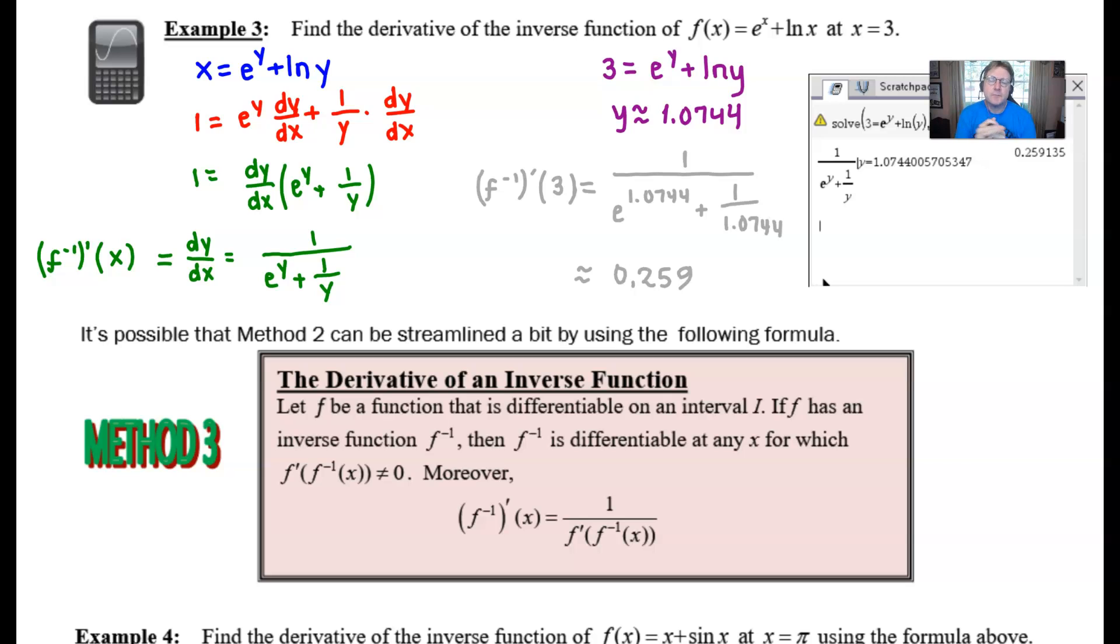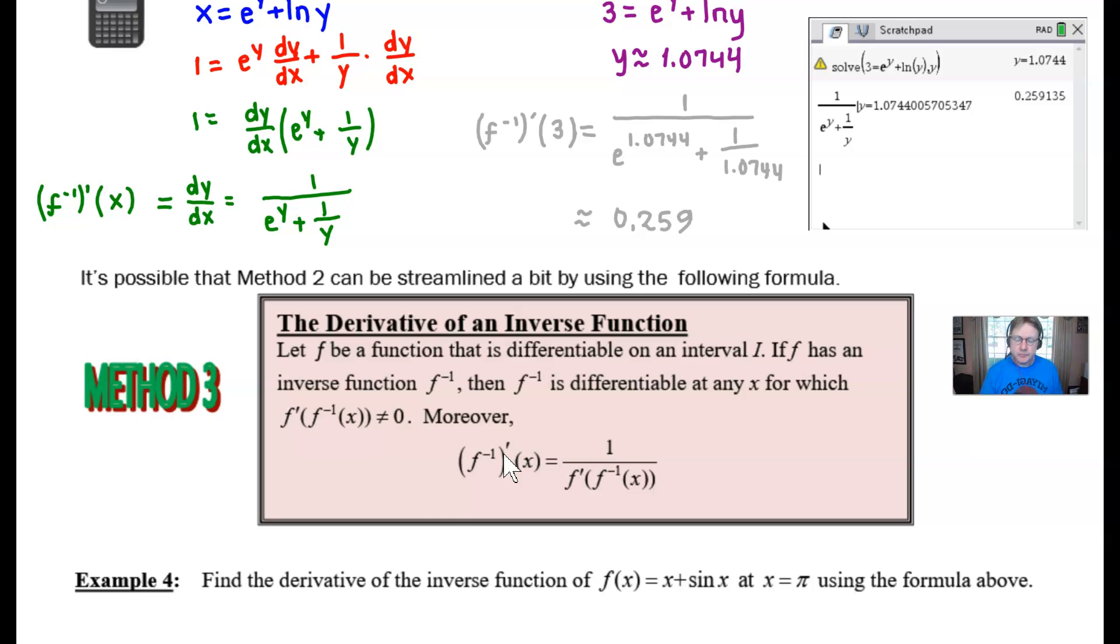Now I've left the work up from my previous example three from video three over the series, because I want to kind of relate to it just a little bit. I'll refer back to some of the work that I did in this example as we move through our fourth example. It says it is possible that method two, which is what I've been showing here in the last couple of videos, can be streamlined by using this formula. And this formula is what I refer to as method three. I know it's a very intimidating formula. A lot of times students will look at that and think, oh my gosh, there are too many symbols. I don't understand it.